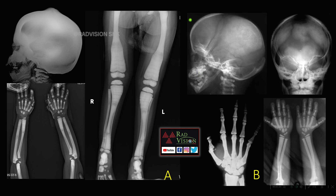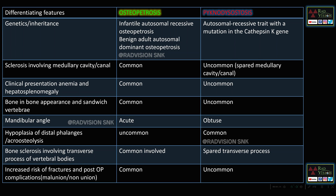Here you can see there is sclerosis of the skull vault, and there are patent fontanelles and patent sutures. There is acro-osteolysis and sclerosis of the bones, but there is no sclerosis of the medullary cavity or bone-in-bone appearance. This is a case of pyknodysostosis.